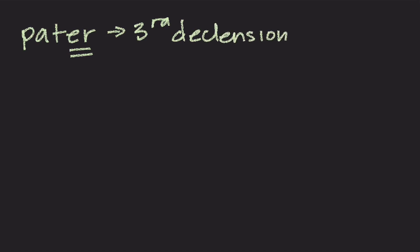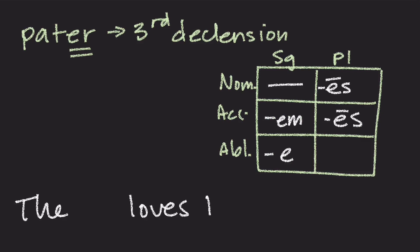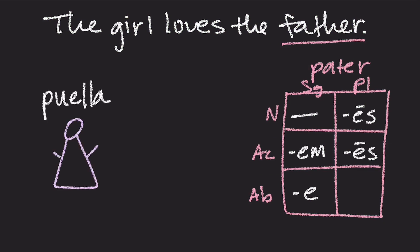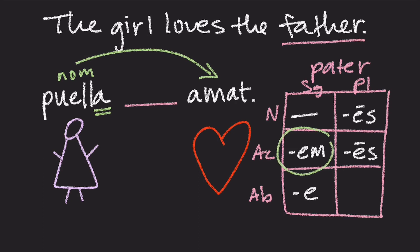Let's look at one more example in the third declension. We have the word Pater, which means father. It ends in E-R, which is one of the third declension nominative endings. Remember, the nominative in the third declension can be one of many endings, and E-R is one of them. Let's try to write the sentence: the girl loves the father. We need Puella again — the girl — the verb Amat meaning she loves, and the father. What case should the father be in if he is receiving the action? We know Puella needs to be nominative, so she is doing the action. Father needs to be receiving, so he is in the accusative case. In the third declension, that's E-M. So Pater changes to Patrem. Now we got it!